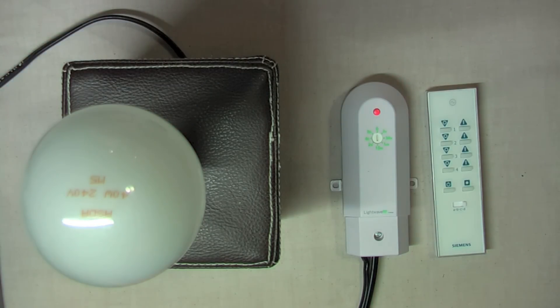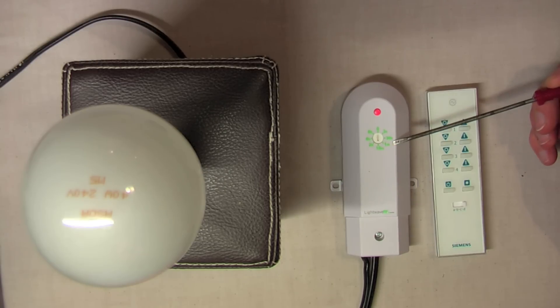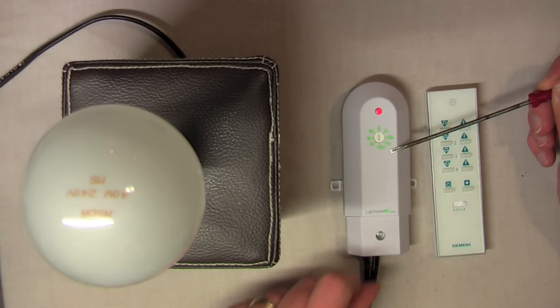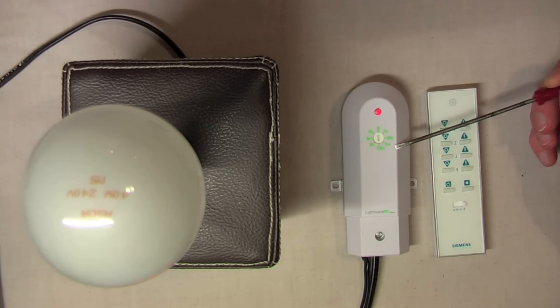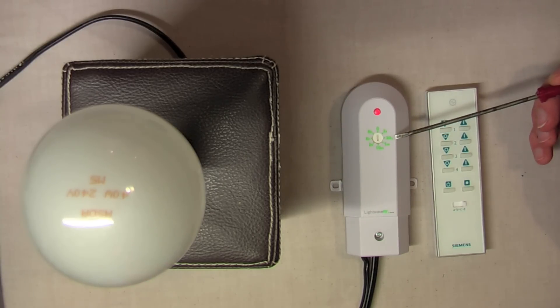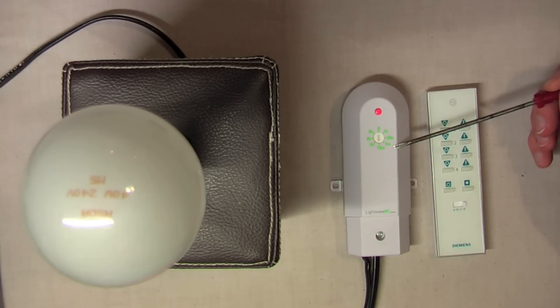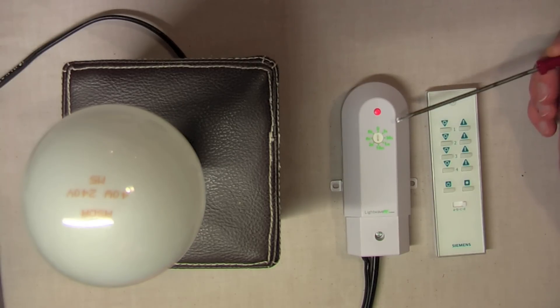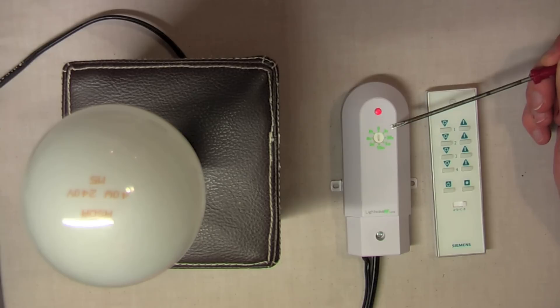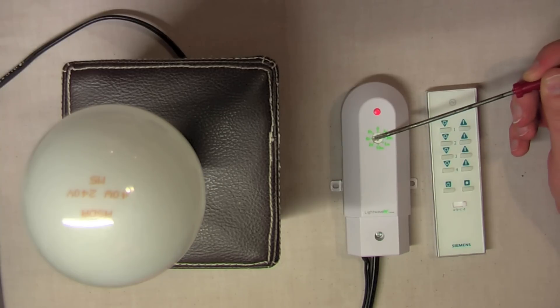Now, the interesting thing with this relay is this small wheel here. This has got an automatic off function. So, regardless of any other control method you've got on the relay, i.e. a LightWave RF Wi-Fi link or remote, you can actually set it so it turns the connected load off automatically. We've got a number of settings on here. We've got a three-second setting, a 30-second setting, one minute, ten minutes, two hours, four hours and eight hours.